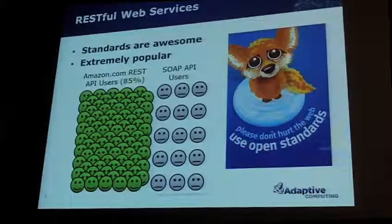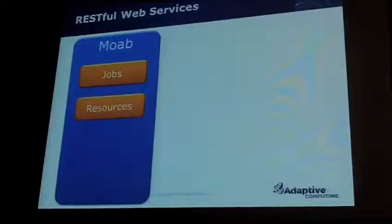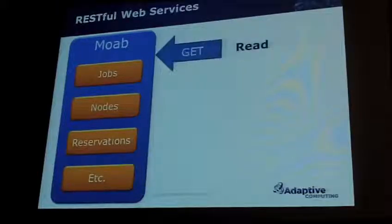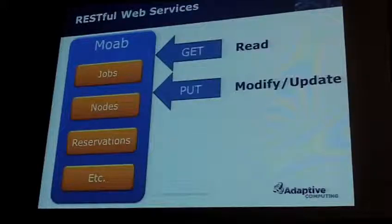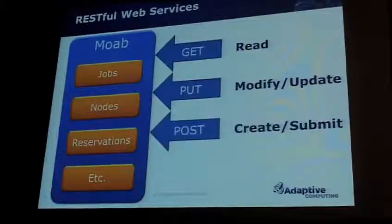We chose REST because we feel like it's a very natural approach to what we do. REST is based on resources being hosted on a server — that's the basic concept. In our case the server is Moab and the resources are things like jobs, nodes, reservations, and all sorts of other things. You use this API to do things to those resources: getting or reading them, updating or modifying them — for example a job's requested start time or duration — and using POST to create or submit a resource like a job.